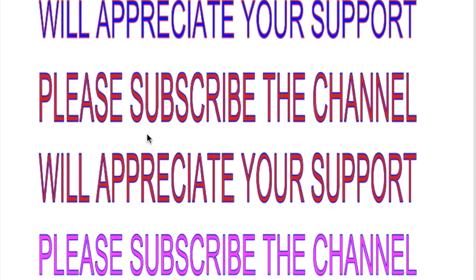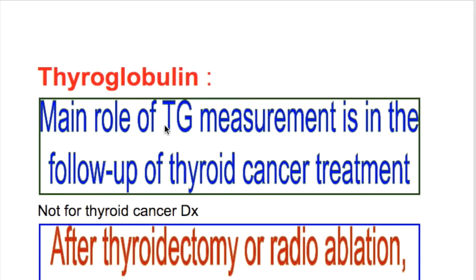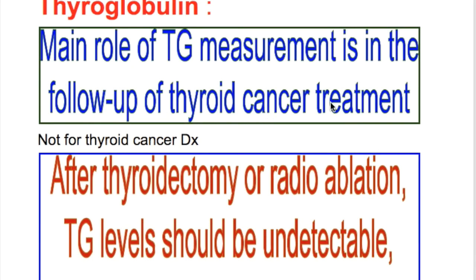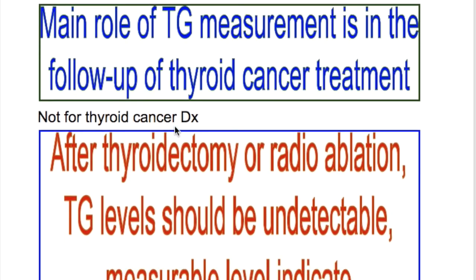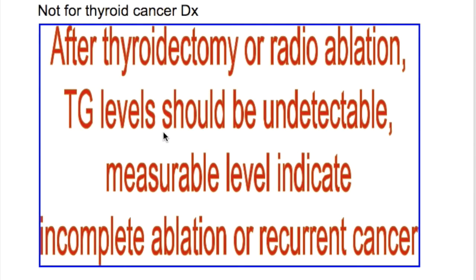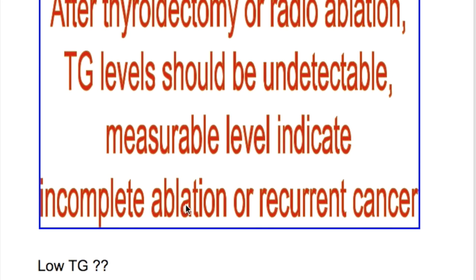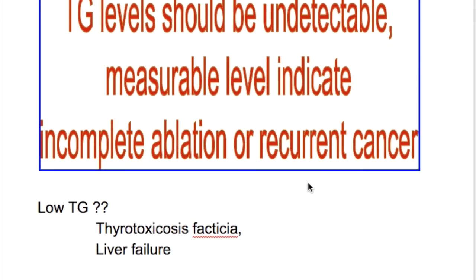In this video we'll discuss thyroglobulin and its clinical importance. The main role of thyroglobulin is its measurement in the follow-up of thyroid cancer treatment. It's not used for diagnosis of thyroid cancer. After thyroidectomy or radioablation, thyroglobulin levels should be undetectable. A measurable level after that indicates incomplete ablation or recurrence of cancer.